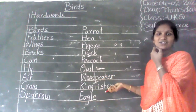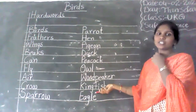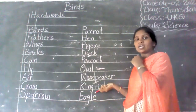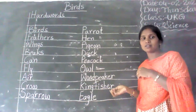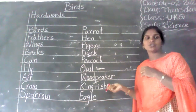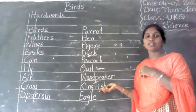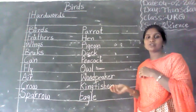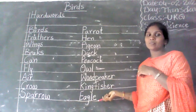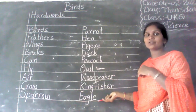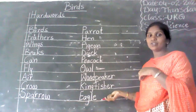Woodpecker — W-O-O-D-P-E-C-K-E-R. Kingfisher — K-I-N-G-F-I-S-H-E-R. Eagle — E-A-G-L-E. Read and write neatly, like I am writing.